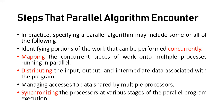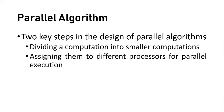So when we design a parallel algorithm and execute our problem, we follow these steps. You can eliminate steps depending on your computer architecture. Two key steps in the design of a parallel algorithm are: first, dividing a computation into smaller computations — you have a big problem or task and you divide it into smaller tasks; and second, assigning those tasks to different processes. These are basic steps that every parallel algorithm follows, irrespective of the computing architecture.